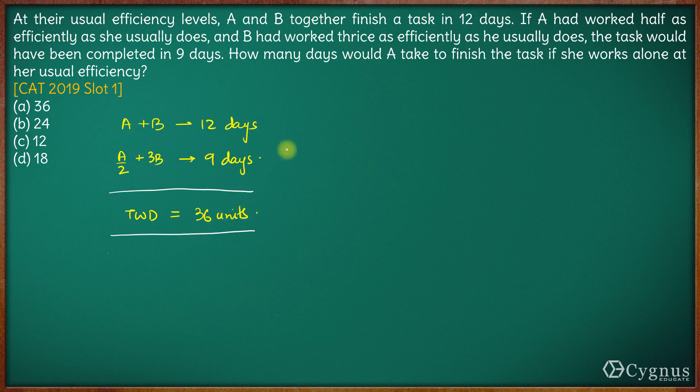If this is the total work to be done, the combined efficiency in the first case, let us say A and B are their usual efficiencies. So efficiency of a small a, efficiency of b small b. So the combined efficiency in the first case will be 36 by 12 which is 3 units per day.